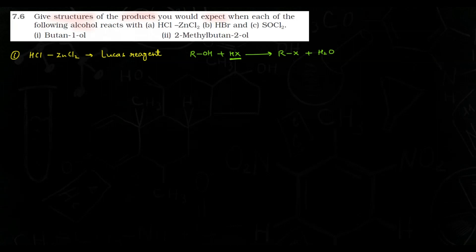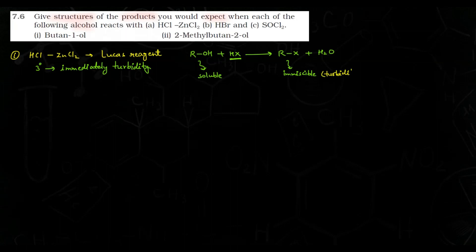Yeh jo hum test karwa rahe hain — Lucas test — yeh kaam kaise karta hai? Agar aapke paas primary, secondary, and tertiary alcohols hain, to jo tertiary alcohol hai woh is reagent ke saath immediately turbidity dete hain. Tertiary alcohols sabse zyada reactive hote hain. Jo alkyl halide bana woh Lucas reagent mein immiscible hota hai, isliye turbidity milti hai.